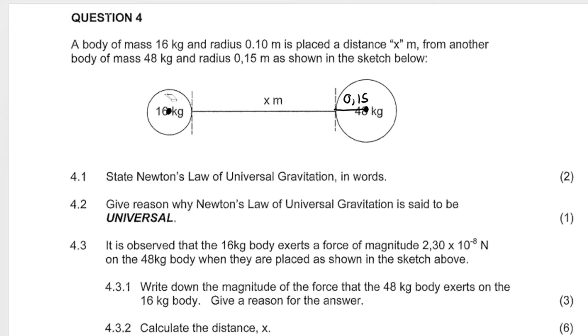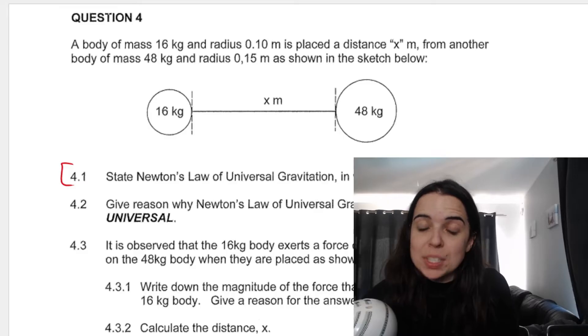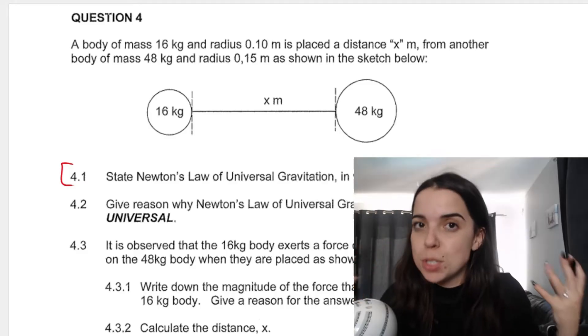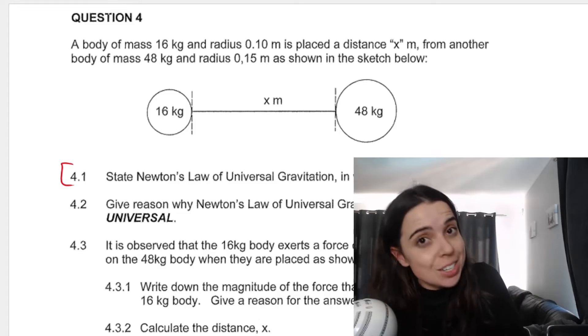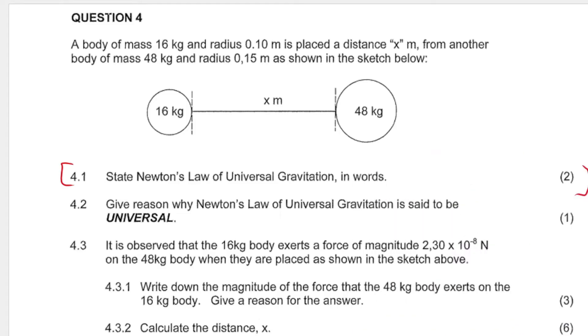First question is state Newton's law of universal gravitation. This is such a common definition that you can get in your papers, it comes up in almost all your exams and if you don't get this one you get Coulomb's law which is in the electrostatics section and it's a very similar definition. So you need to learn your definitions properly off by heart.